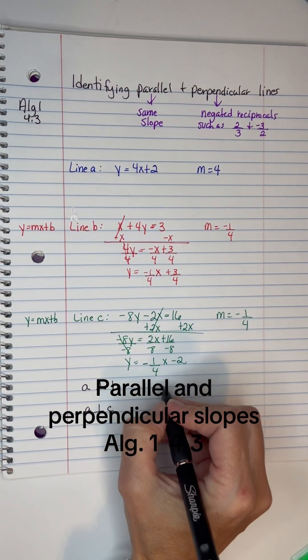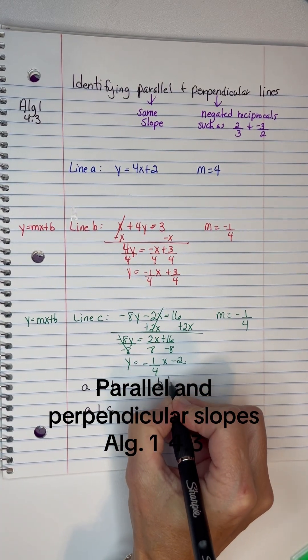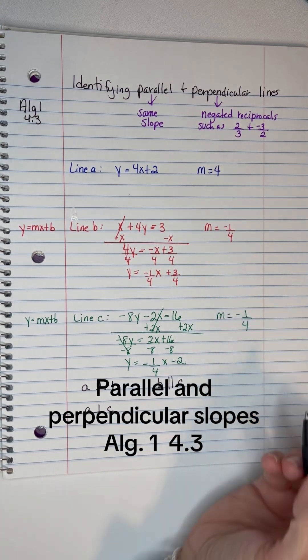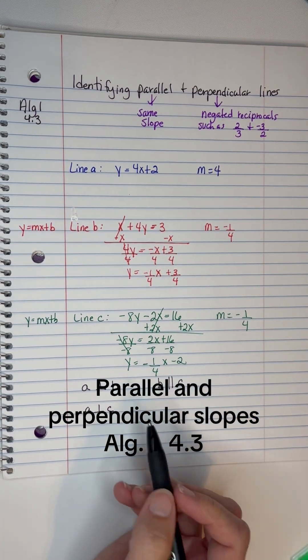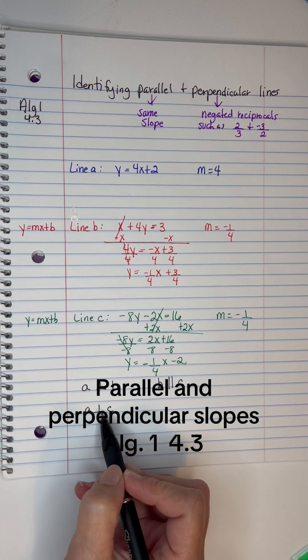And B and C are parallel, so B is parallel to C, same slopes. So this is the symbol for parallel, and this is the symbol for perpendicular.